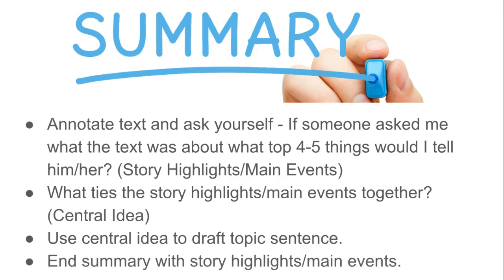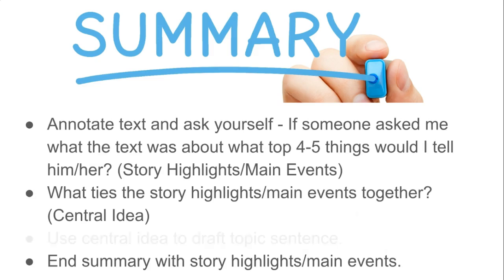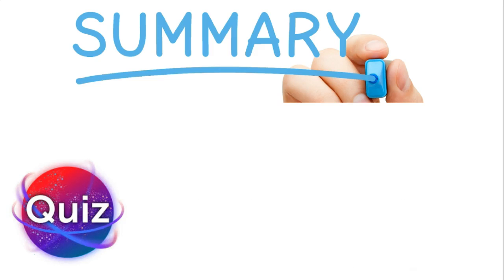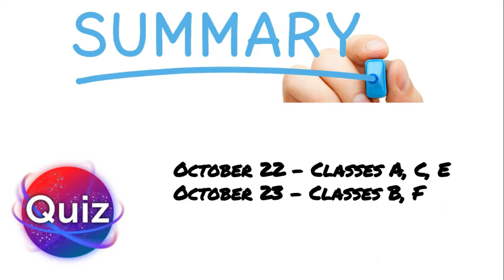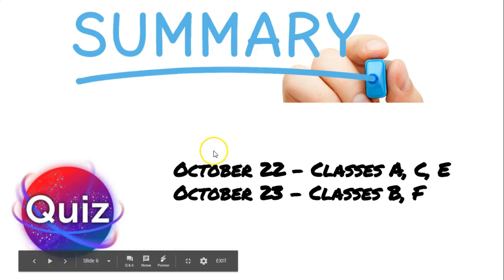That's really what you do to walk through that organizer and write your summary. Quick note: you will have a summary quiz on the extended day — day five. For classes A, C, and E, that will be October 22nd; for classes B and F, October 23rd. You'll get a nonfiction text and write a summary. I will have returned your revised summaries from the climate change article. Look at those, see what you did well, see where you need to improve — this is our last practice run before the quiz.